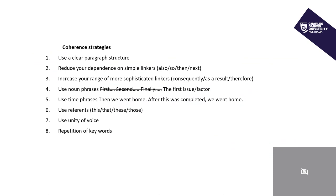In addition to working on our clarity, to be an effective writer at university we also want to know about different coherence strategies. Coherence and clarity are two of the five C's of effective writing. Coherence strategy number one, which we've already looked at, is to use a clear paragraph structure. In the example, we described it as linear paragraph structure because one sentence logically builds to the next.